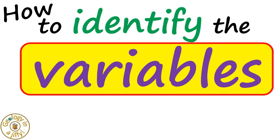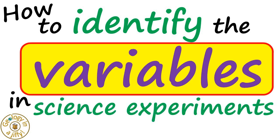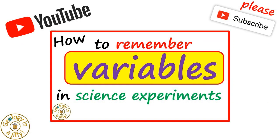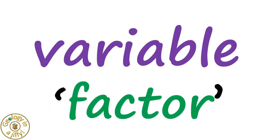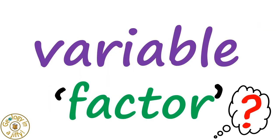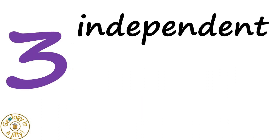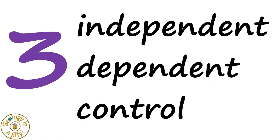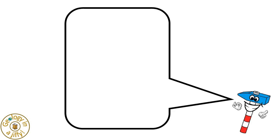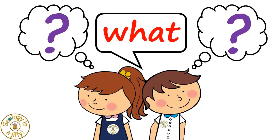How to identify the variables in science experiments. We know from our other video that a variable is a factor that needs to be thought about before we carry out our experiments, and that there are three main variables: the independent, dependent, and control or controlled variables, which we remember their names by 'I. Don't. Care.' But what do these words represent?